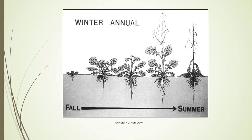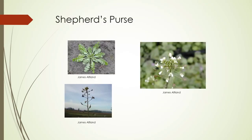Winter annuals sprout in the fall — and really this is the time you want to get these. They'll continue to hang out until it starts to warm up, then they'll start flowering, and it happens very quickly. They go to seed really fast before you even know it, and when you start trying to pull them they're shooting seeds everywhere. Shepherd's purse is an example of a winter annual.